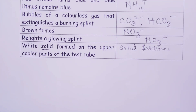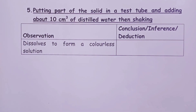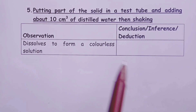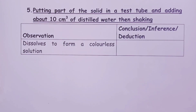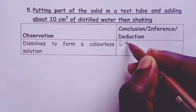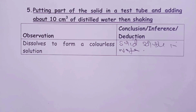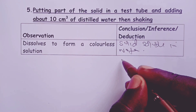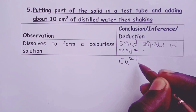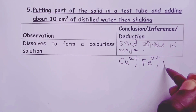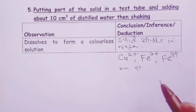The next test is adding water to your sample and shaking. If the solid dissolves to form a colorless solution, the conclusion is that the solid is soluble in water. A student also has the option of giving a negative inference: because a colorless solution is formed, copper ions (which would otherwise be blue), iron-2 ions (which would otherwise be green), and iron-3 ions (which would otherwise be brown) are absent.